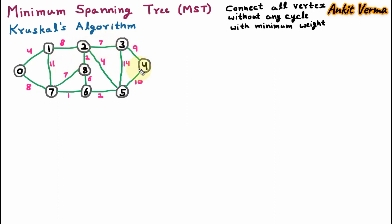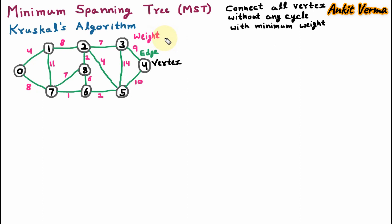In this graph we have circles in black color — these are the vertices. So here we have vertices 0, 1, 2, 3, 4, 5, 6, 7 and 8. In the minimum spanning tree we have to connect all the vertices and while connecting they should not have any cycle. In the graph we have green colored lines joining these vertices and these are the edges. Any edge joins two vertices, and every edge contains a number which is the weight of that edge.